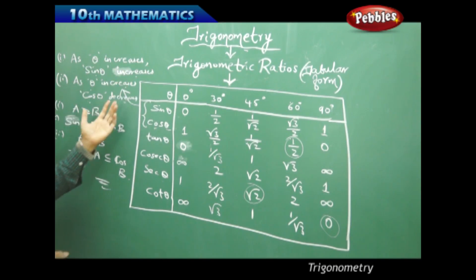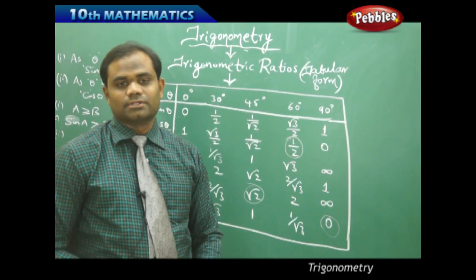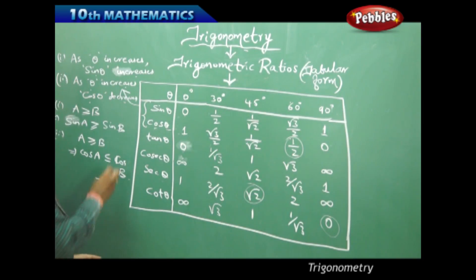So when theta increases, sin theta increases or when theta decreases, sin theta decreases. But coming to the cosine, they are inversely proportional because when theta increases, the cosine angle decreases or when theta decreases, the cosine angle increases, taken respectively with mathematical definitions.